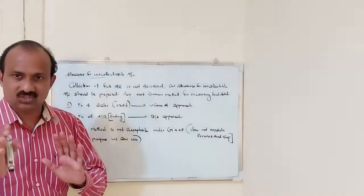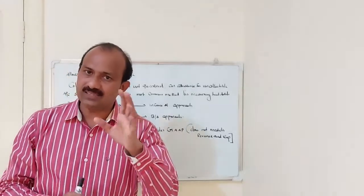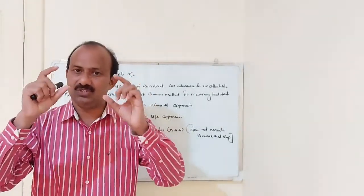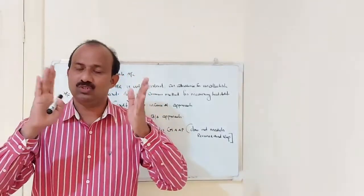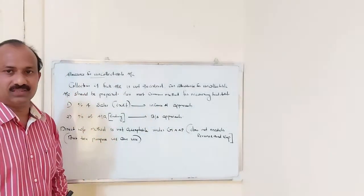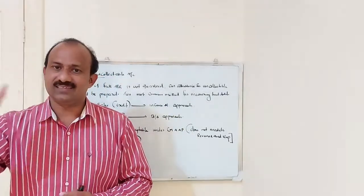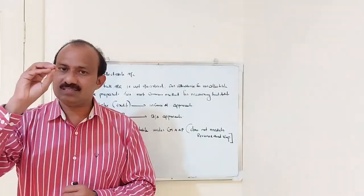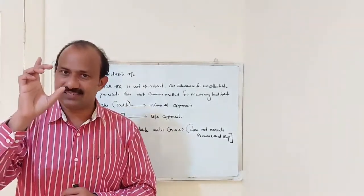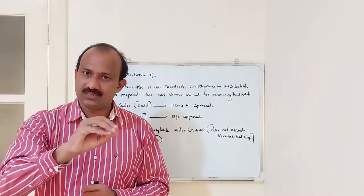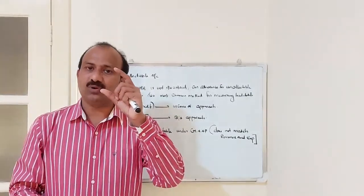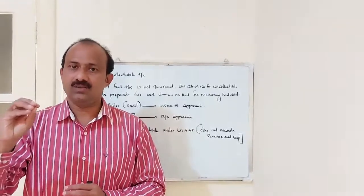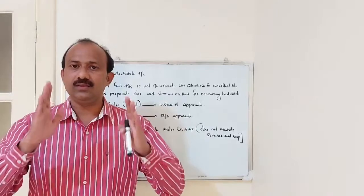Two most common methods are used for measuring bad debts. Number one: the percentage of sales method, meaning credit sales. Credit sales is an income statement item — that means the trading profit and loss account area. Therefore, a percentage of credit sales is one method for measuring bad debts. This approach is known as the income statement approach: if bad debts are measured on the basis of credit sales, that approach is known as the income statement approach.